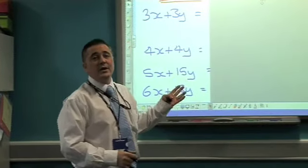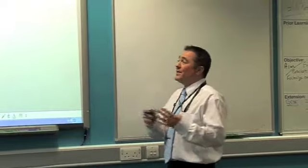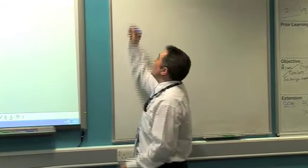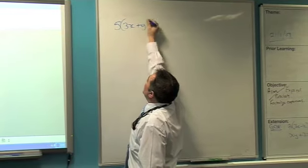Okay, what we're going to look at now is factorising. Now factorising is the opposite of multiplying out brackets or expanding brackets. So if I've got something that's inside a bracket at the moment, if I've got 5 times 3x plus y.